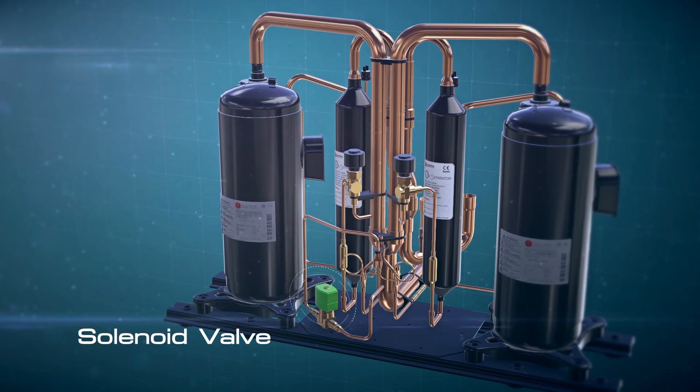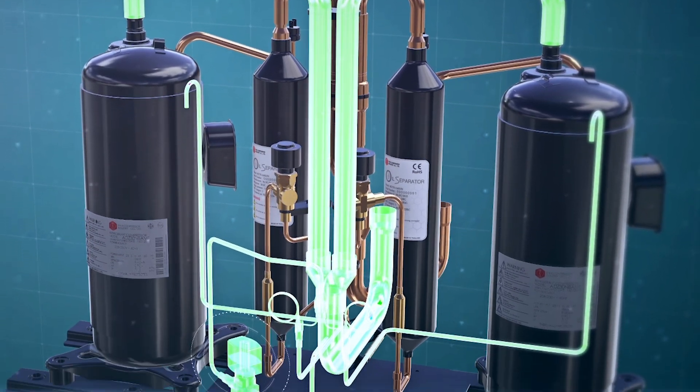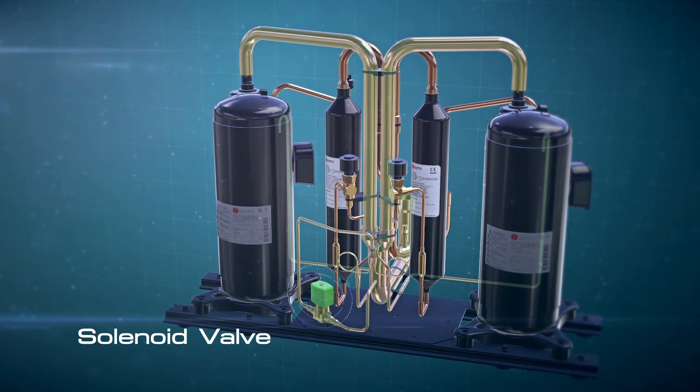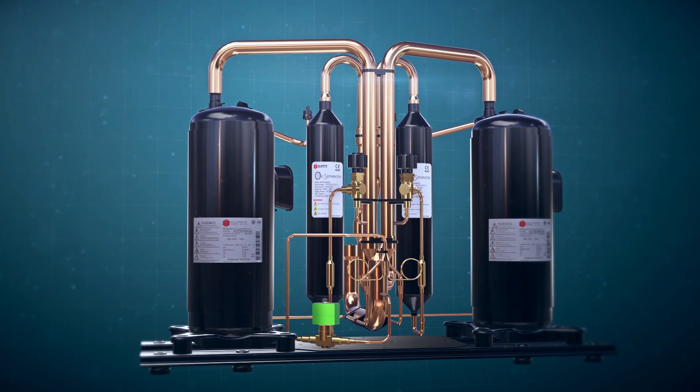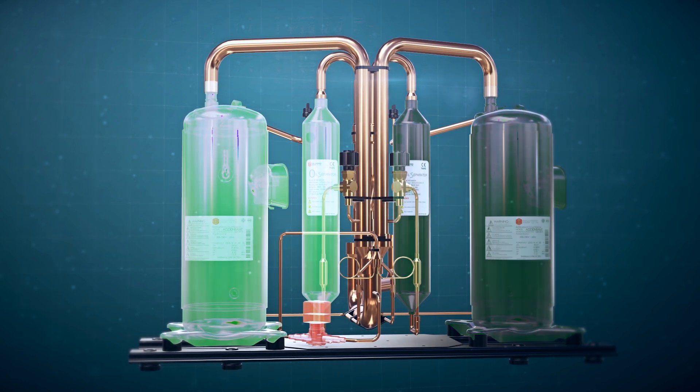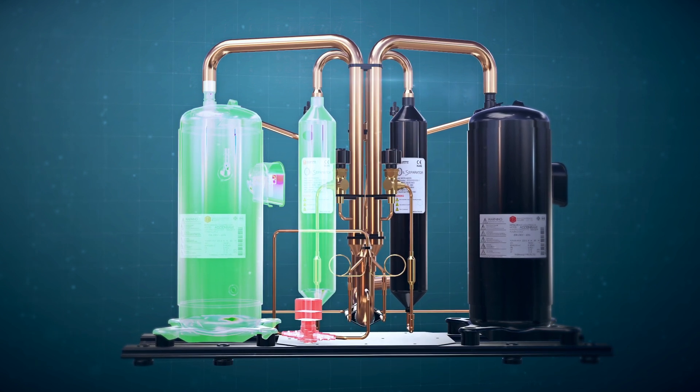Moreover, a solenoid valve is needed per one plural compressor set by connecting the manifold oil balance pipe to the solenoid valve, then to the manifold suction pipe. The solenoid valve will open when more than one compressor is working at the same time and will close when only one compressor is working.